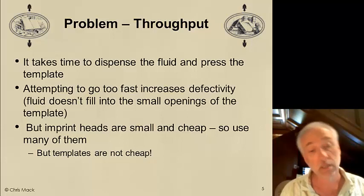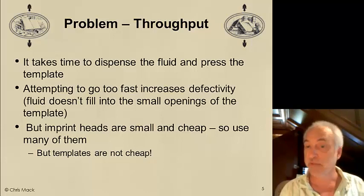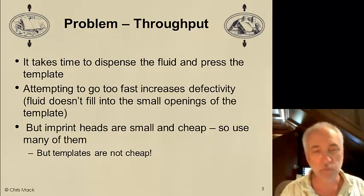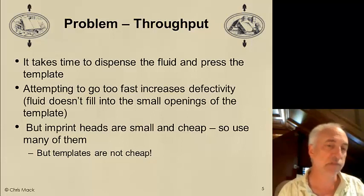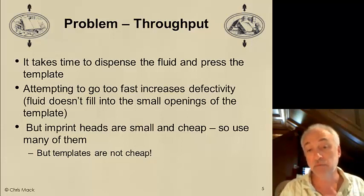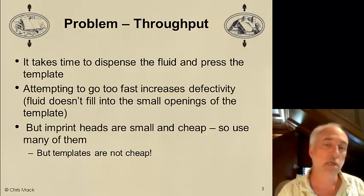We could have lots of print heads and print multiple wafers at once, but that requires multiple templates and templates are not cheap. So we have to consider how to reproduce templates inexpensively. We tend to make one master template, then reproduce it with daughter templates, and those daughter templates are used in the actual imprinting of the wafer.